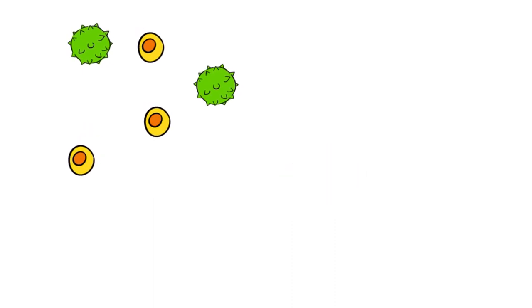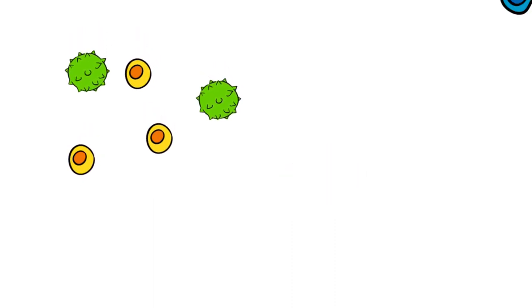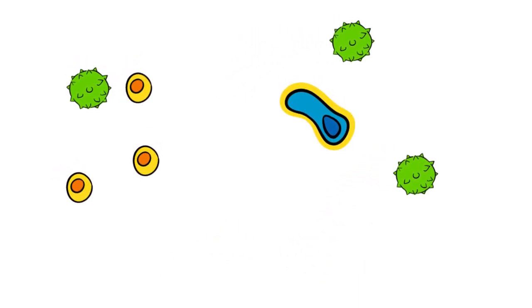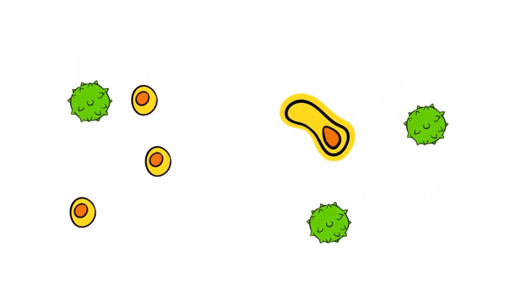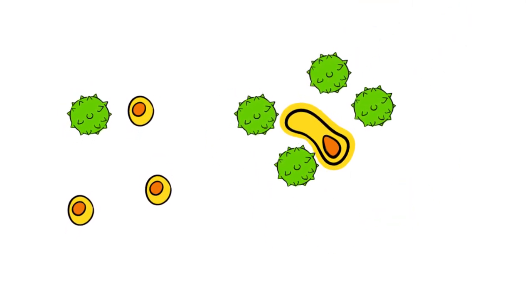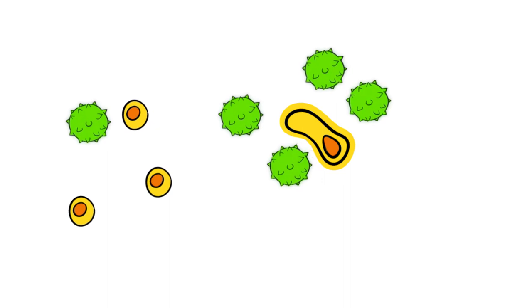But the immune system doesn't always work the way it should. Some cancer cells can hide from the immune system by making themselves seem like normal cells. And sometimes the immune system finds cancer cells, but it isn't strong enough to destroy them.